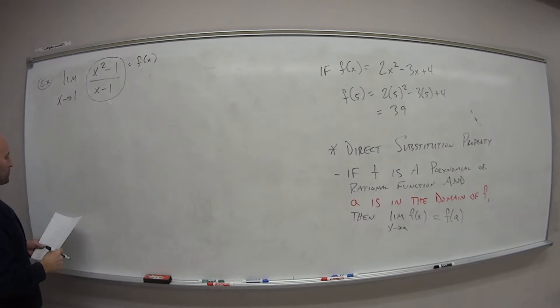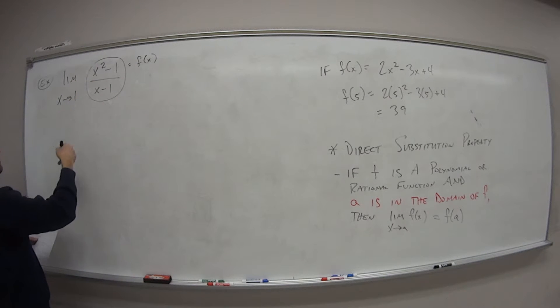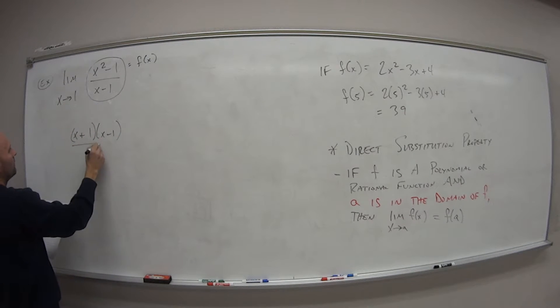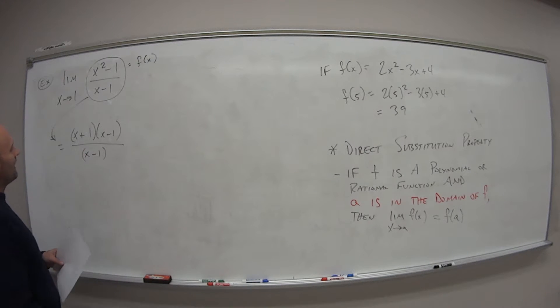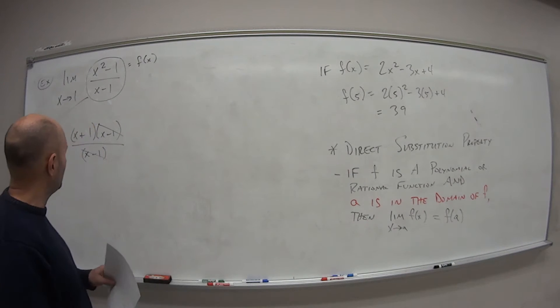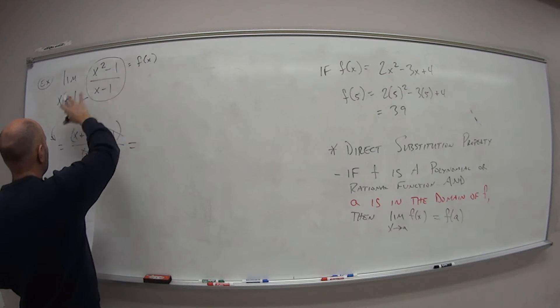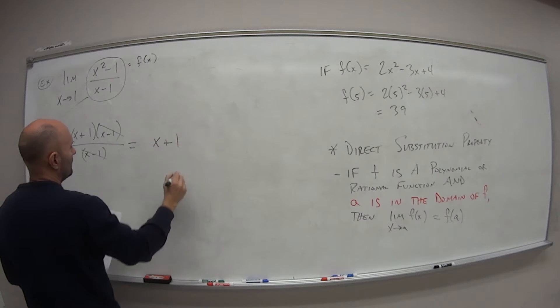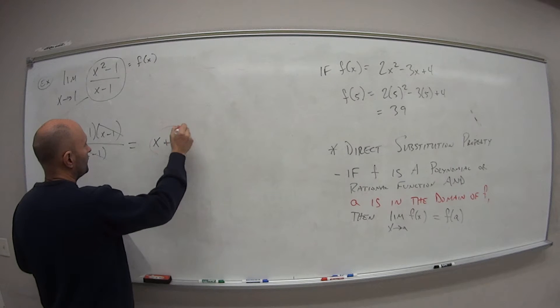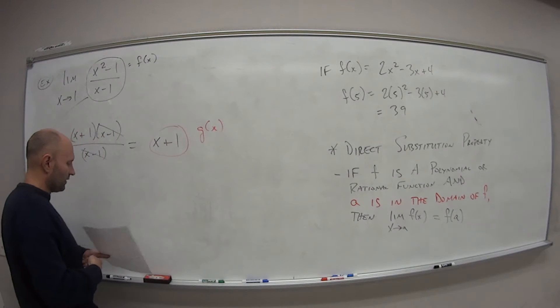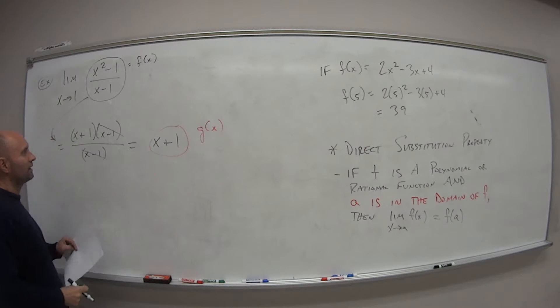So let's call this guy here f of x, the whole thing. That's our function. So if I factor this, the numerator is what? It's a difference of squares: x plus 1 times x minus 1. So this guy here is equal to x plus 1, x minus 1, all over x minus 1. So now what can I do? Well, I can cancel an x minus 1 in the numerator with an x minus 1 in the denominator. So this f of x really will just simplify into what? x plus 1.